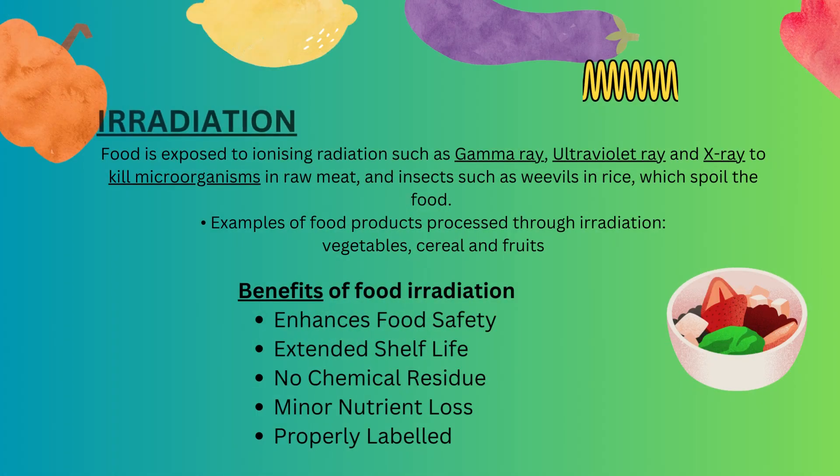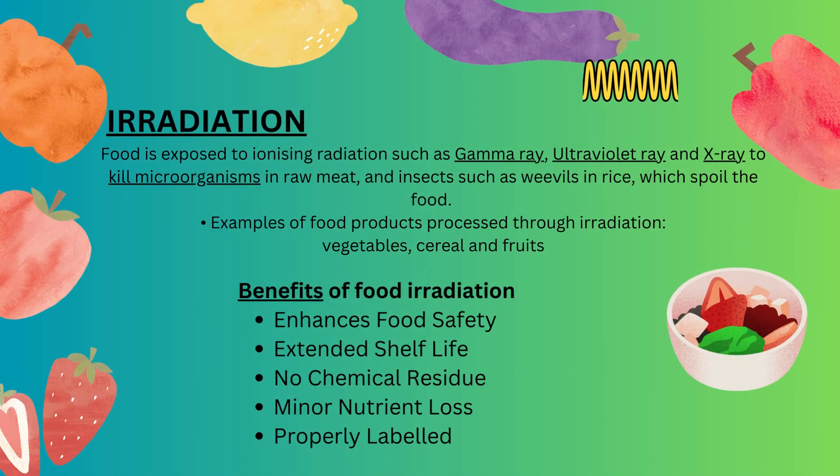Irradiation involves exposing food to ionizing radiation such as gamma rays, ultraviolet rays, and X-rays to kill microorganisms in raw meat and insects such as weevils in rice which spoil the food. Examples of food products processed through irradiation include vegetables, cereal, and fruits. This relates to the subject of physics.